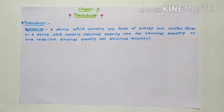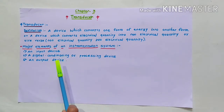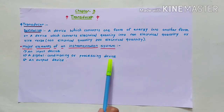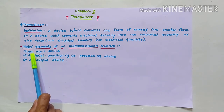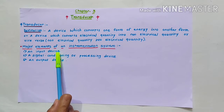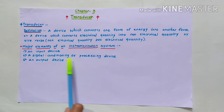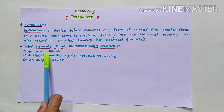An instrumentation system generally consists of the following major elements: first, an input device; second, a signal conditioning or processing device; third, an output device. The input device receives the quantity under measurement and delivers a proportional electrical signal to the signal conditioning device, and transducers are used as input devices.